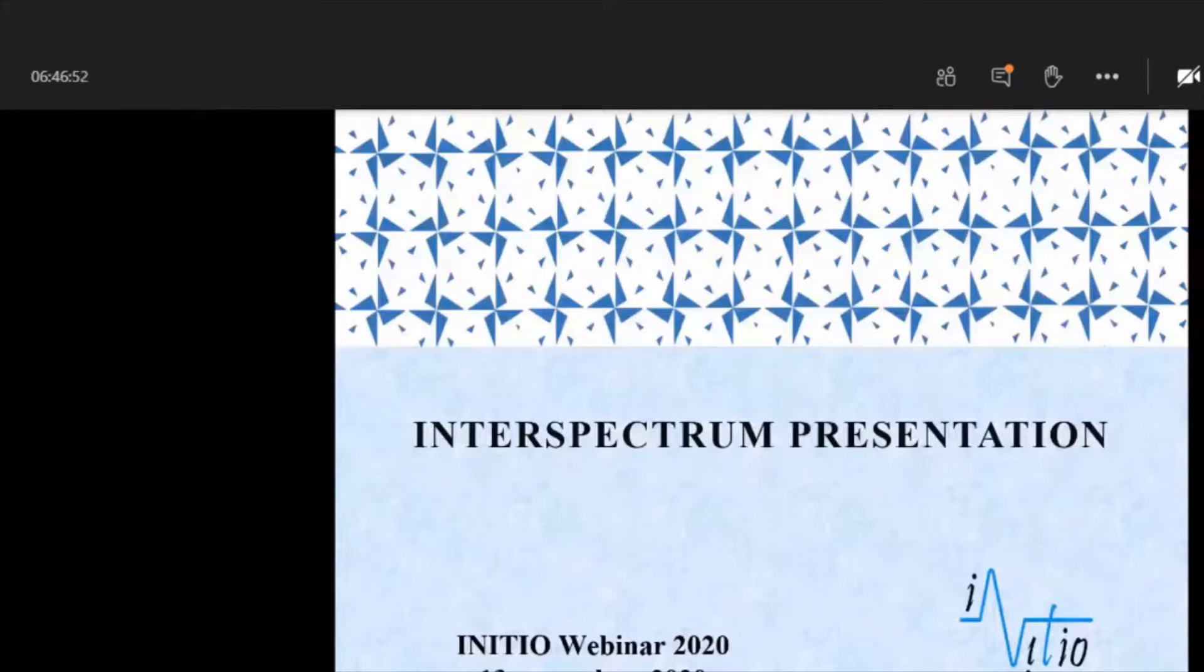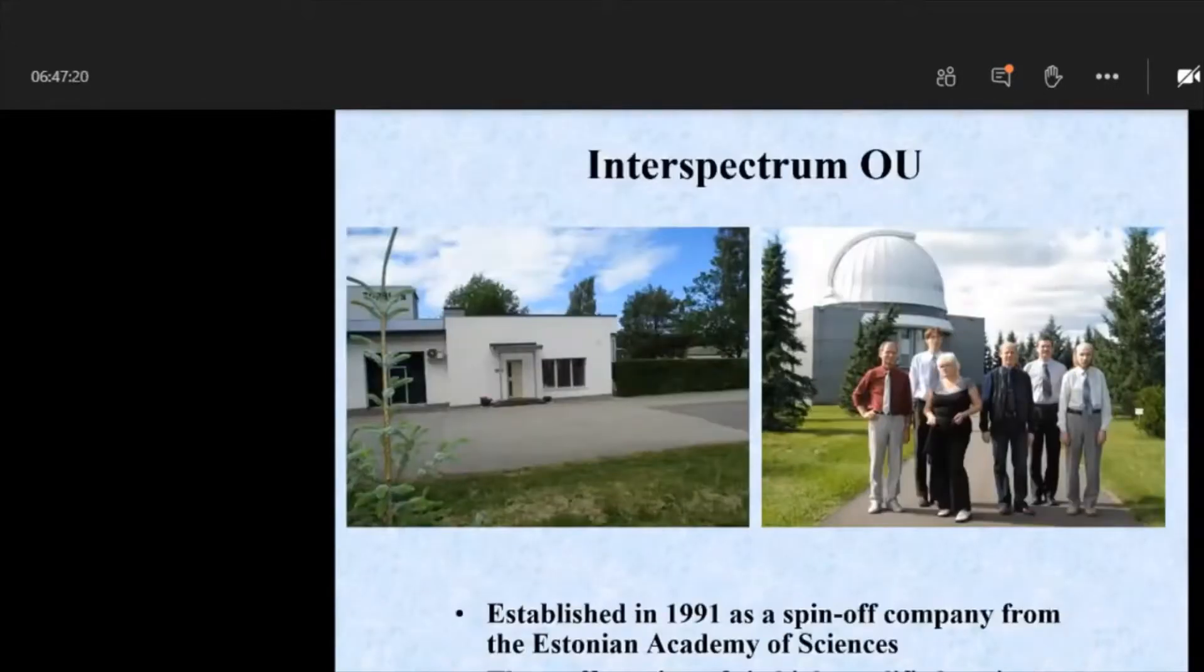Good afternoon. Riina kindly allowed to use her computer. This is why we are trying to figure out how it works. So, Interspectrum as the smallest partner in this project was established nearly 30 years ago in 1991. The main staff was connected with space research and we worked in Tartu Observatory. And at the moment we are also situated in the territory of Tartu Observatory. This is why you can see in the picture a telescope behind us and our office entrance.